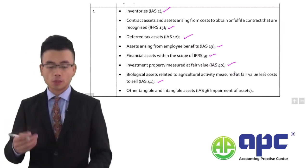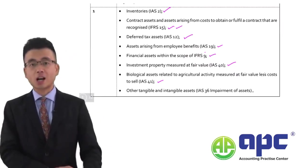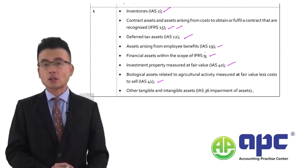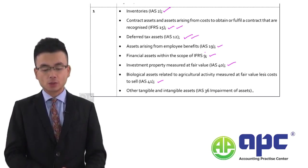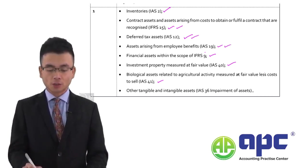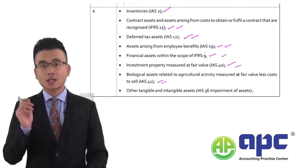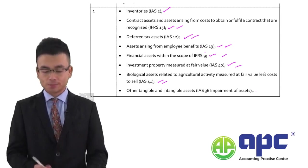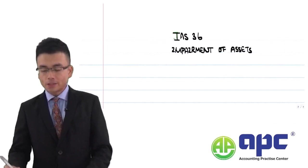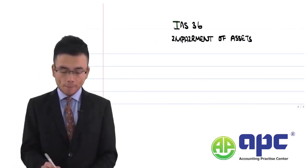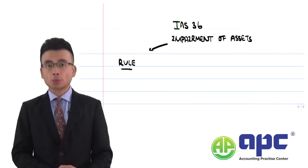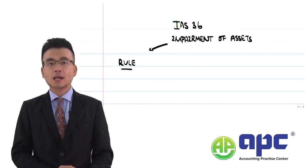For example, we've talked about inventories, the contract asset under IFRS 15 Revenue, deferred tax asset related to future tax benefits we can receive, the pension asset, financial asset, investment property, biological asset — these assets will not be covered under IAS 36. The basic rule about impairment of assets relates primarily to property, plant and equipment, intangible assets, goodwill, and also non-current assets held for sale.